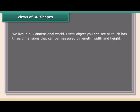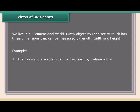Views of 3D shapes: We live in a three-dimensional world. Every object you can see or touch has three dimensions that can be measured by length, width, and height. For example, the room you are sitting in can be described by three dimensions, and the monitor you are looking at also has three dimensions.